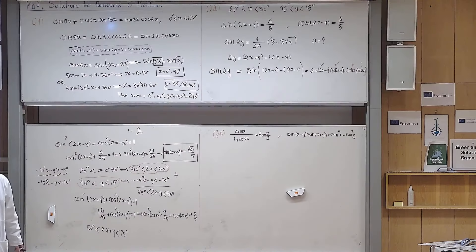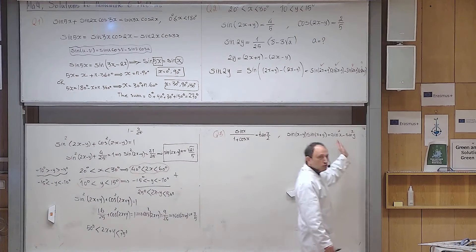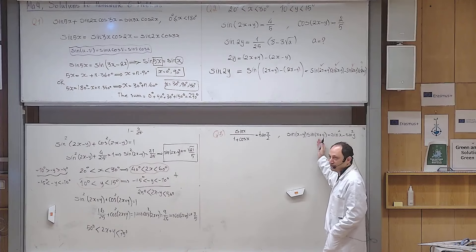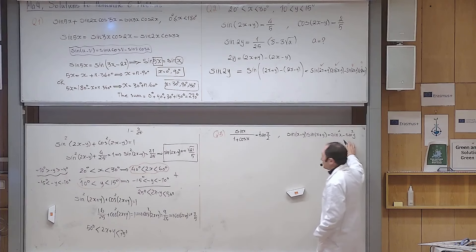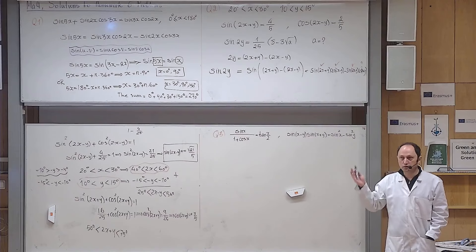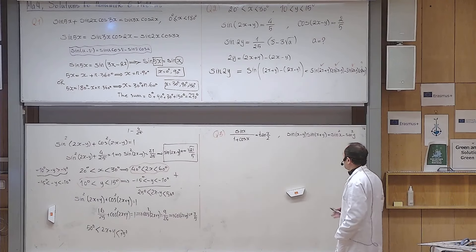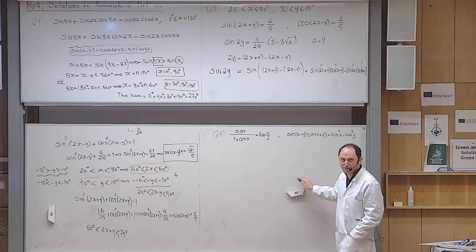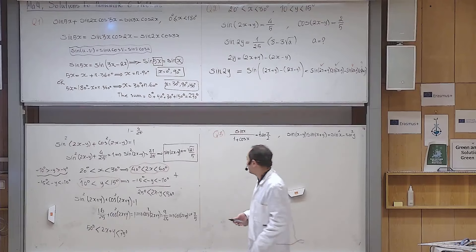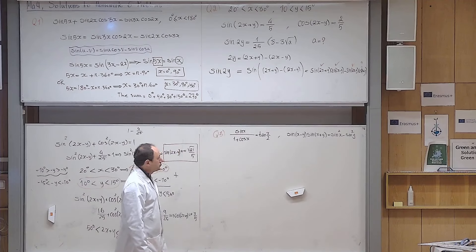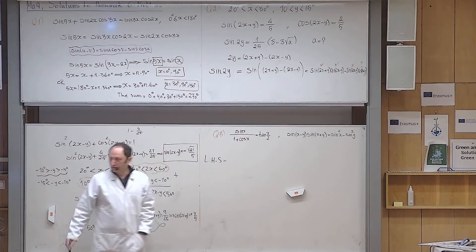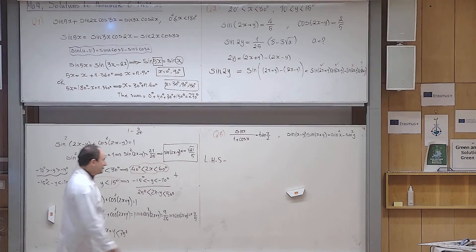Let us start with the second identity: sine(x−y)·sine(x+y) = sine²x − sine²y. Starting from the left-hand side, sine(x−y) is the subtraction formula and sine(x+y) is the addition formula. Expanding: (sine x cosine y − sine y cosine x)(sine x cosine y + sine y cosine x). These are the same two quantities, once subtracted and once added, being multiplied — that is the conjugate rule.